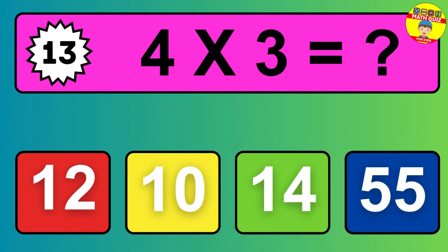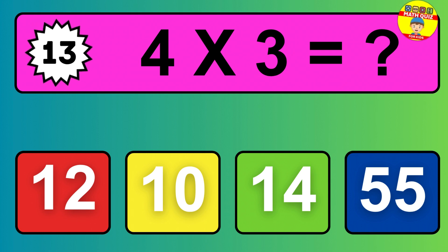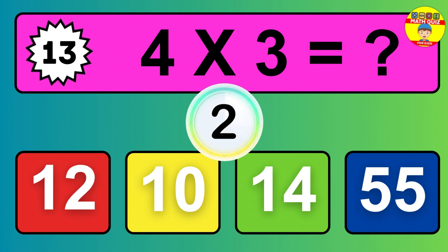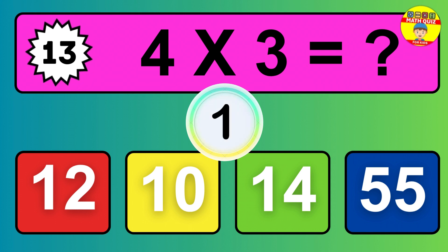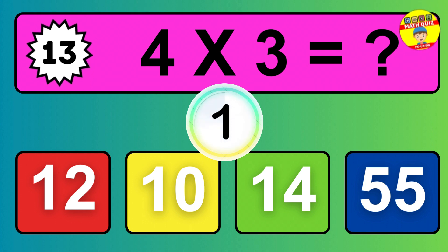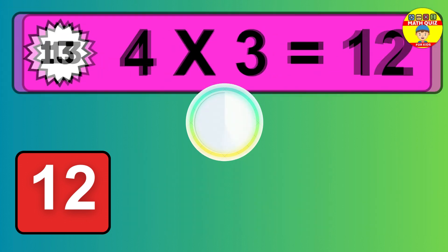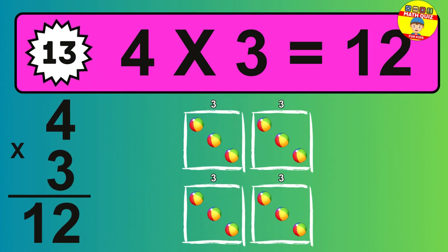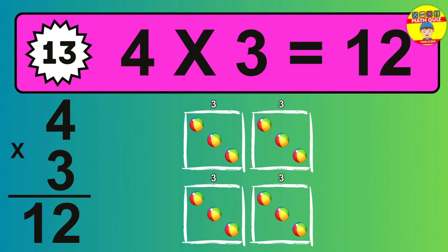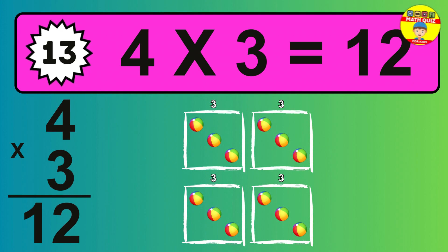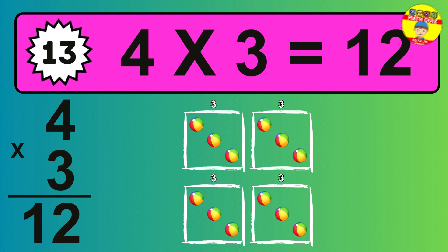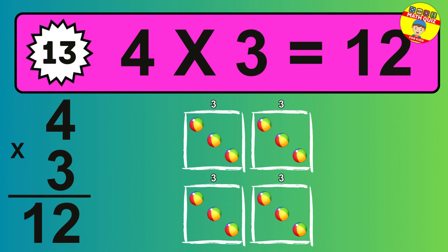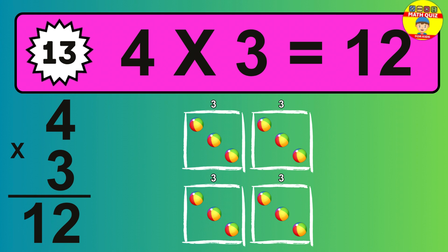Question 13. 4 times 3 equals what? The answer is 4 times 3 is 12. To calculate, we have 4 groups with 3 balls each one. So how many balls do we have? 12 balls.